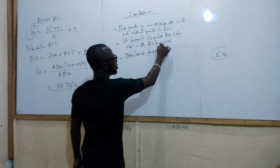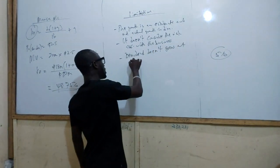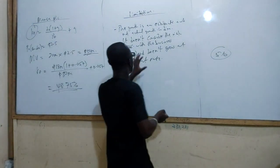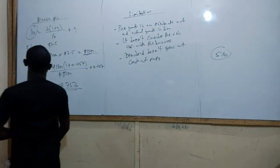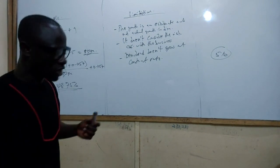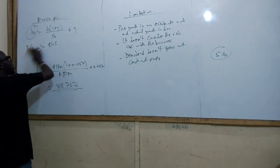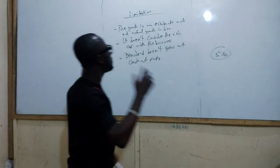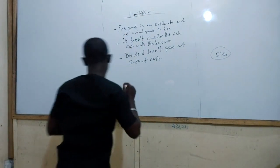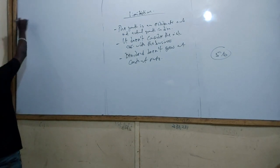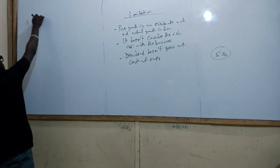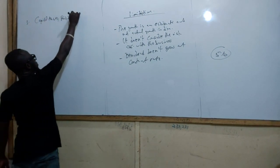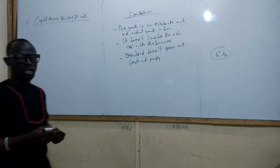Dividend doesn't grow at a constant rate — that is another limitation. These are some limitations we can talk about in relation to using the dividend model to calculate the cost of equity. To combat these limitations, there is a third way to calculate the cost of equity: using what is called the Capital Asset Pricing Model (CAPM).